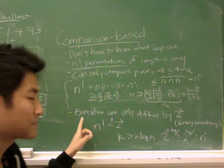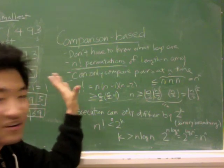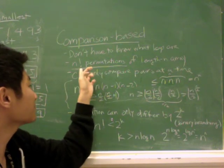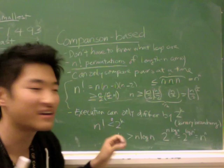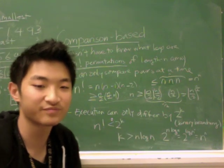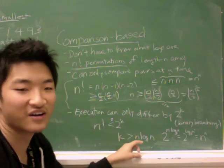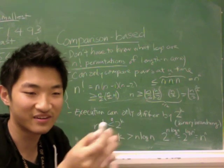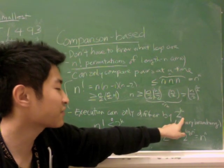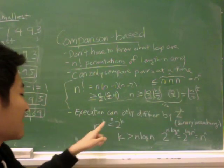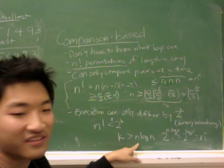And one other observation we make about comparison-based sorting algorithms is that your algorithm has to take into account these n factorial permutations, but your algorithm can only differentiate by branching based on the decision of its comparisons. And so the only way your algorithm can accommodate all the different possible branches is if your number of comparisons 2 to the k is greater than n factorial. And so we realize that k has to be greater than n log n.